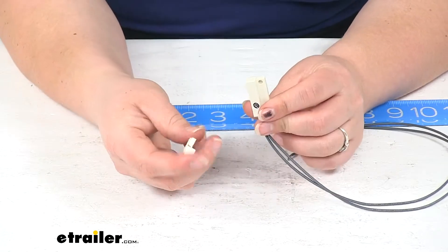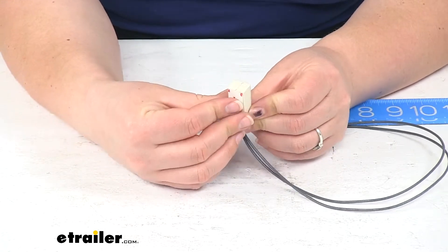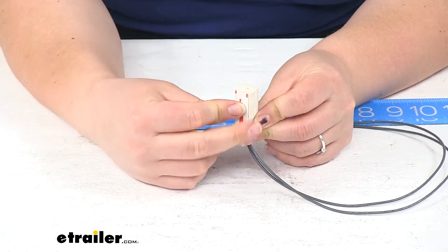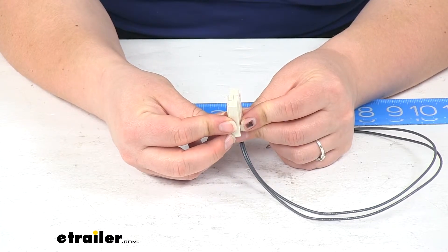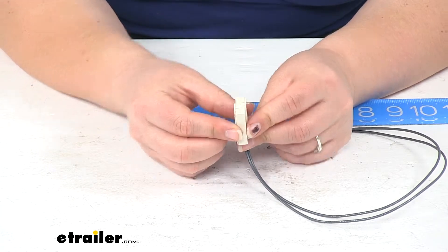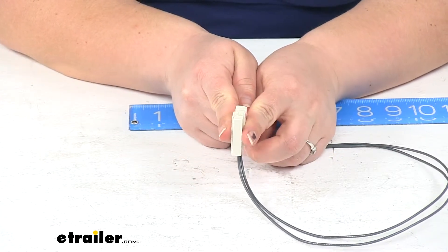You want to make sure whenever you mount these up that they do match together whenever the door is closed. And you can either have them together like this or a little bit flatter if you need that to be a little flatter connection point.